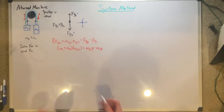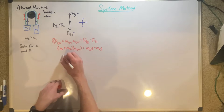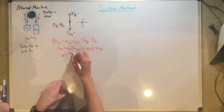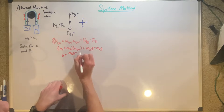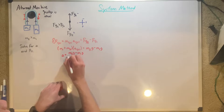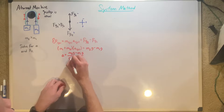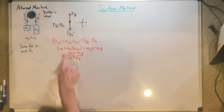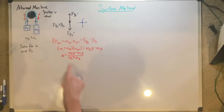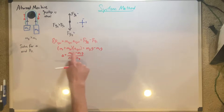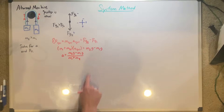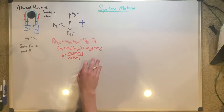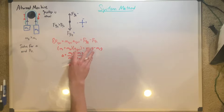We solve for A: A is equal to M2G minus M1G, all over M1 plus M2. Notice how when I found this, I didn't bother to distribute it, because it's just way easier to divide by this, which instantly isolates your A, instead of distributing it and then having to undistribute it to isolate A again.